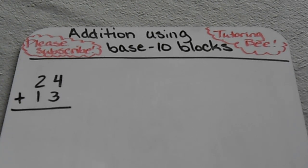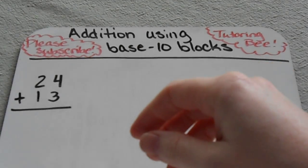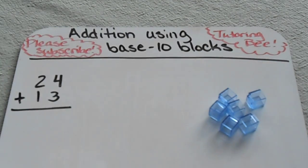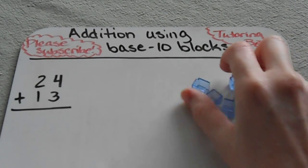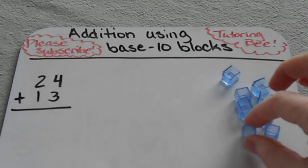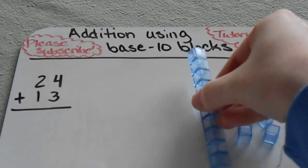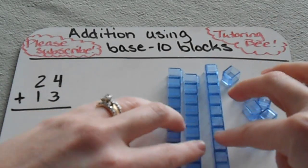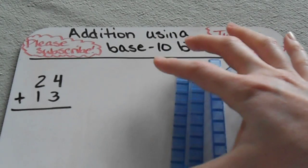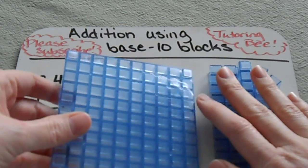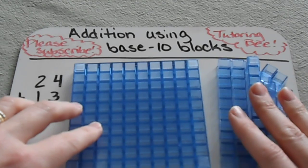If you don't know what base-10 blocks are, they are these little manipulatives that most students have seen and used in the classroom that are composed of ones cubes. Ten of those make the tens longs or sticks, and then ten of these would make a big flat like this, which is called 100.